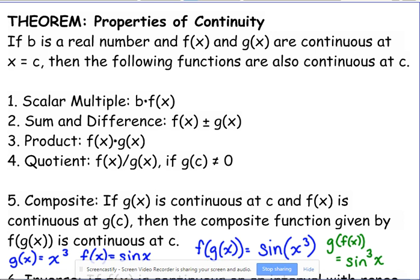Our first case, just like with limits, is the scalar multiple. You're still continuous when you multiply a function that's continuous by a scalar multiple. For example, sine of x is continuous everywhere, so if I have two sine of x, it's still continuous.